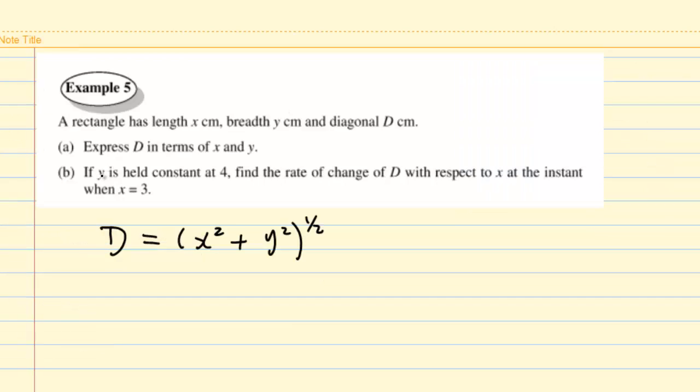Now we answer part b. If y is held constant at 4, that is, y is always equal to 4, find the rate of change of D with respect to x, which means we want to find the partial differentiation of D with respect to x when y equals 4 and x equals 3.